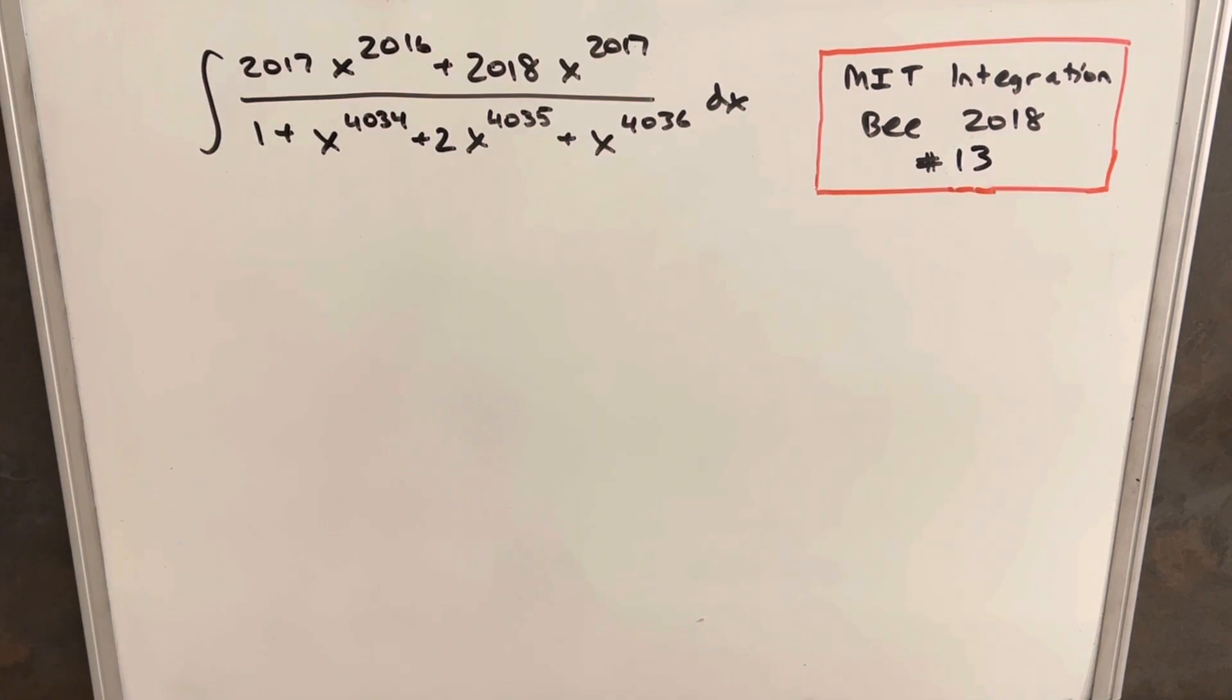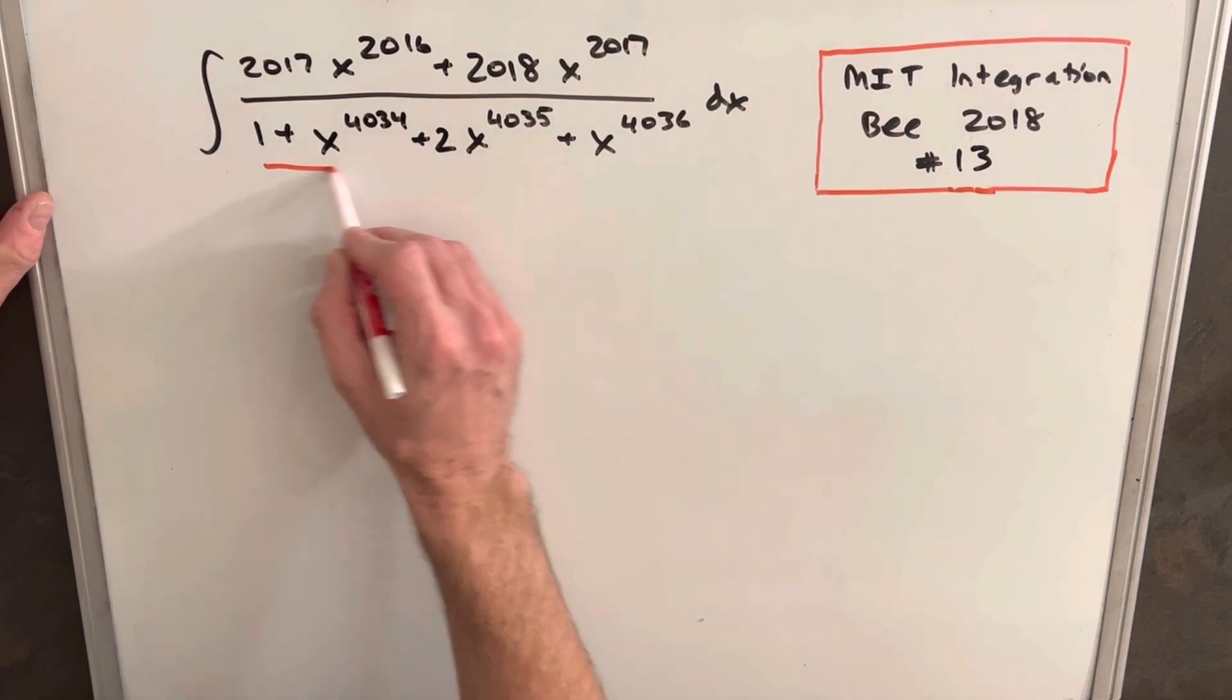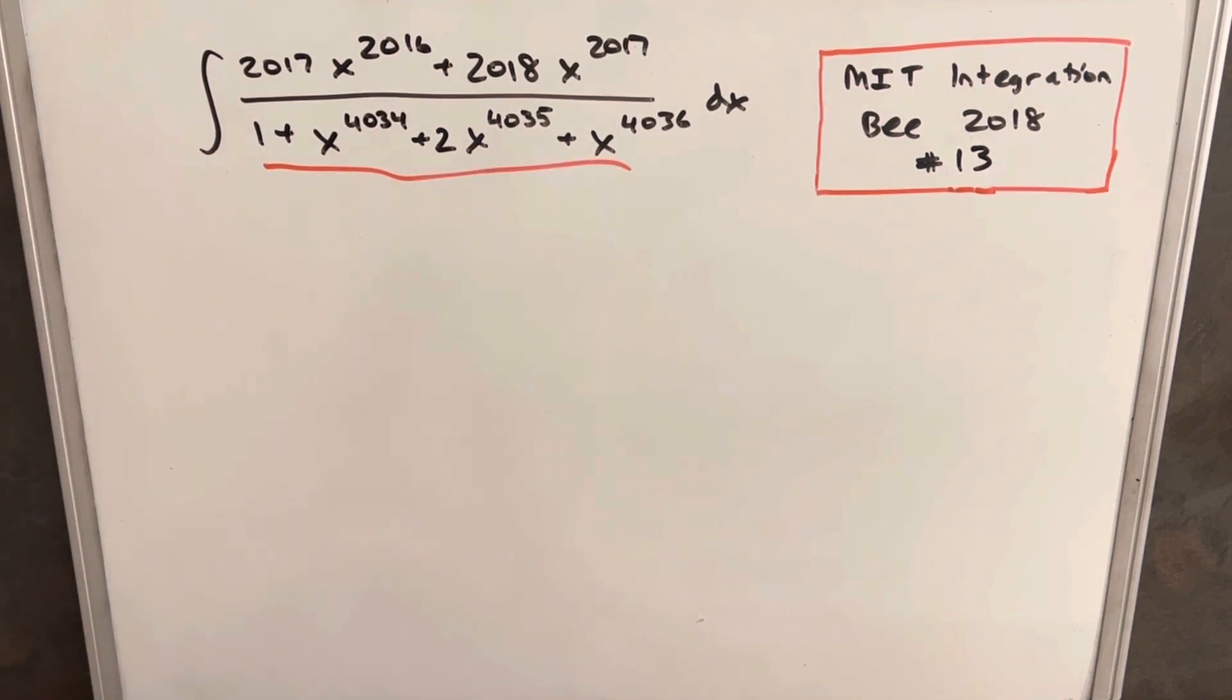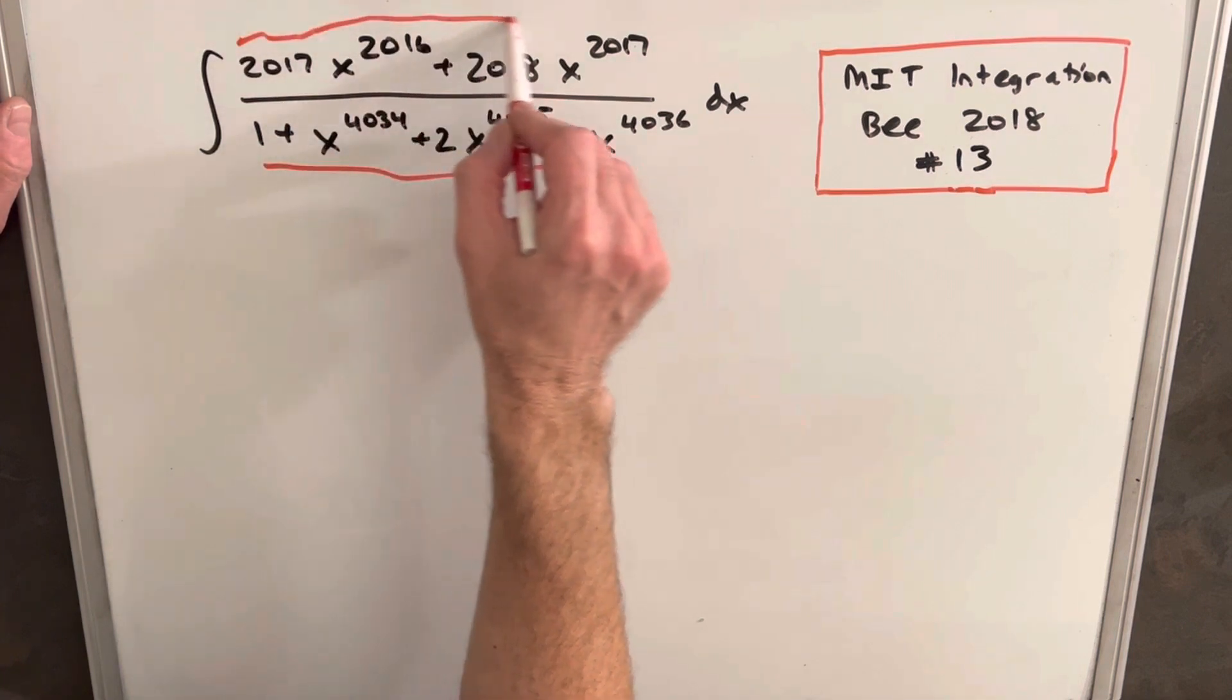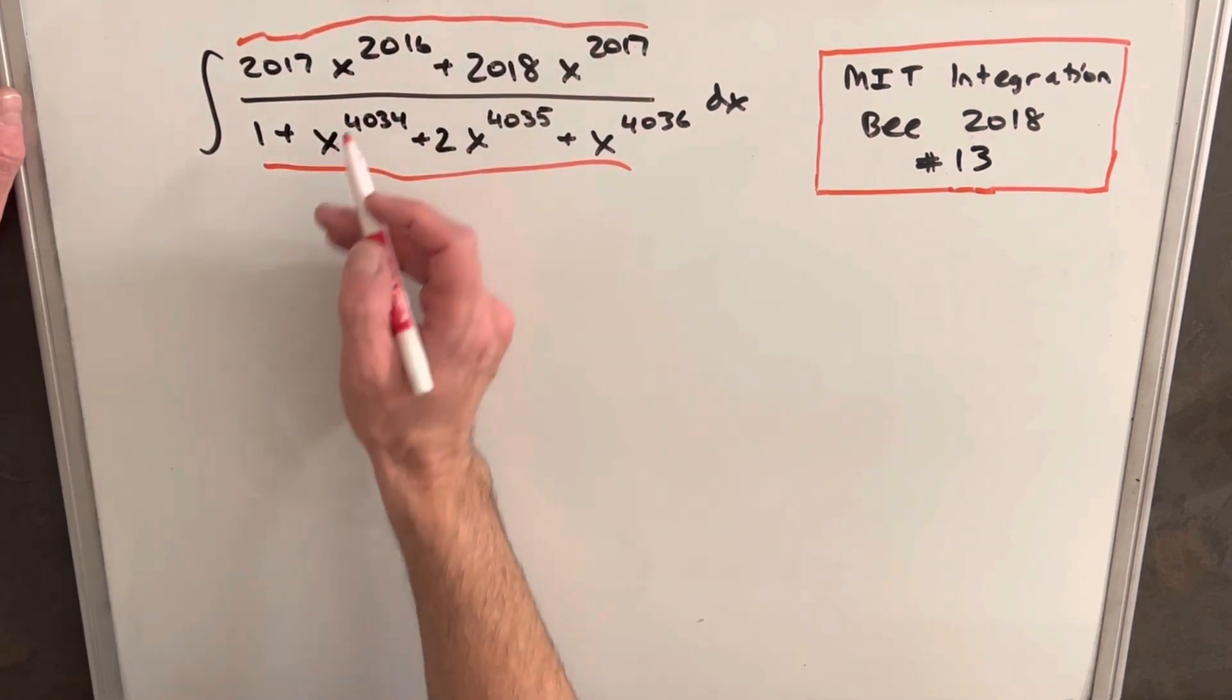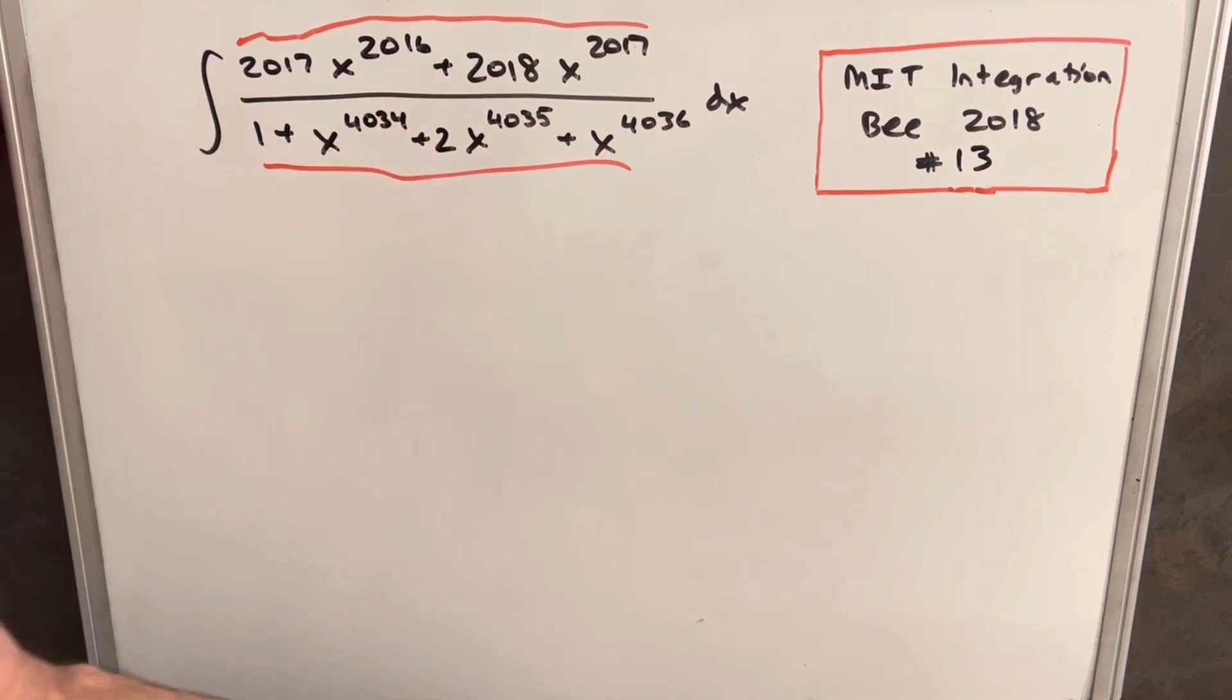So two things jumped out to me right away. I do think that the denominator is factorable but I just didn't want to deal with it at first because I don't want to deal with factoring something with a 4036 power in it. And then the other thing is this numerator is clearly a derivative of something because it's just such it sticks out so clearly that it's the power rule and I actually want to start with that.